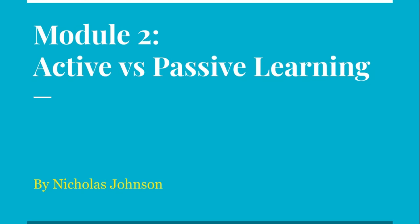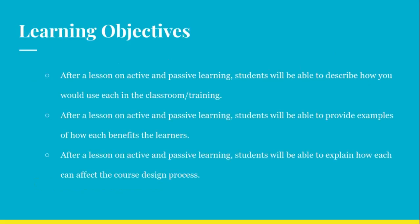Now that everyone has completed the Module 2 discussion, we will now introduce the learning objectives. The first objective reads: after a lesson on active and passive learning, students will be able to describe how you would use each in the classroom and training environment. Number 2: after a lesson on active and passive learning, students will be able to provide examples on how each benefits the learners. And lastly, after a lesson on active and passive learning, students will be able to explain how each can affect the course design process.